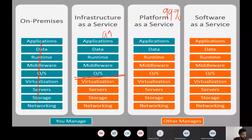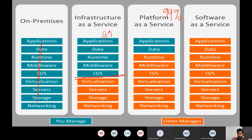With infrastructure as a service, we need to build our server. We need to select the size of the server, install the operating system — it can be Windows or Linux. Middleware, runtime, and data applications have to be configured by us.